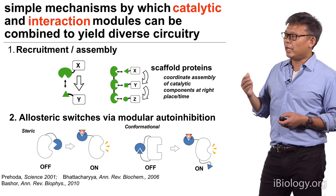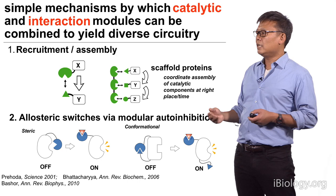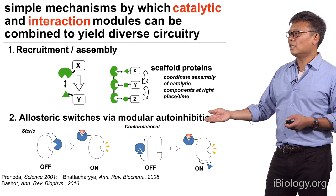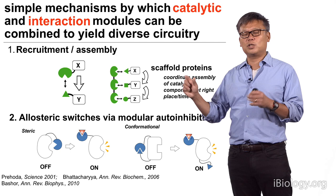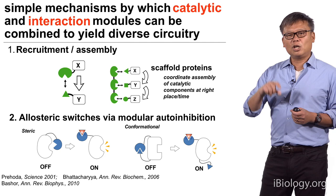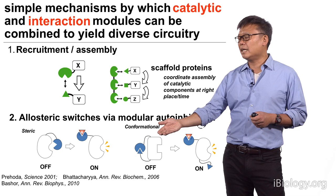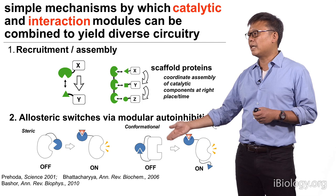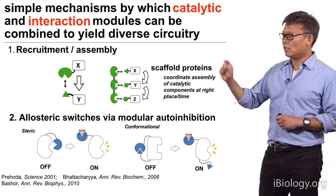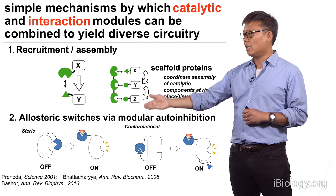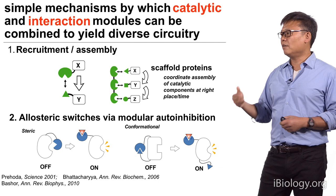A second way that these modules can be used to lead to interesting behavior is the construction of allosteric signaling switches using modular auto-inhibition. Often times you'll find a catalytic domain, say like a kinase, that has other interaction domains within it. But often times in the basal state, these interaction domains will actually auto-inhibit or interact with the catalytic domain itself, leading to inhibition either through directly sterically blocking the active site or by conformationally contorting it so that it's inactive. In such cases, a competing ligand that disrupts this auto-inhibitory interaction can result in the allosteric activation of that catalytic function — for example, activation of a kinase.